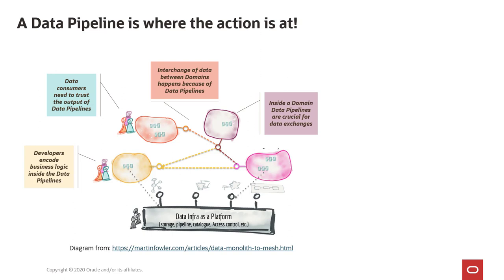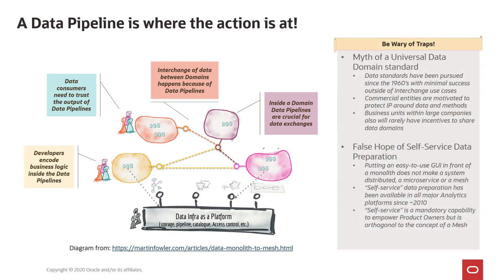The data pipeline is literally where all the action is when it comes to data, data domains, and data products. Pipelines are where developers encode business logic. Pipelines are what data consumers trust to deliver high-value data. Pipelines are used for interchange between data domains, and pipelines are critical for intra-domain interchange as well. It's important not to be lulled into thinking there's a data standard just waiting to solve the issues of data semantics and data domains — there are very few examples of broadly successful standards for dealing with data domains.